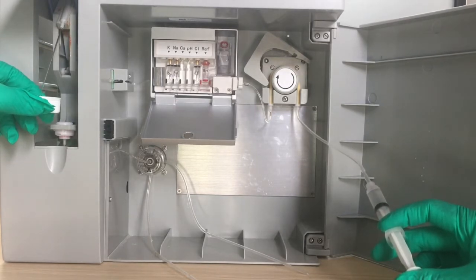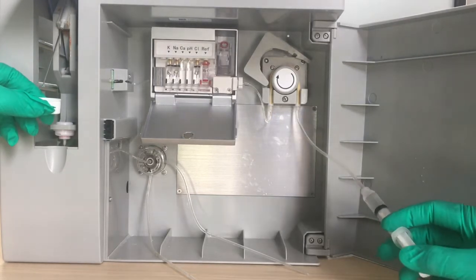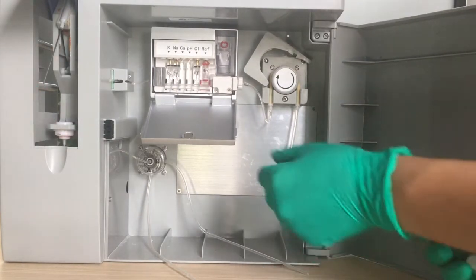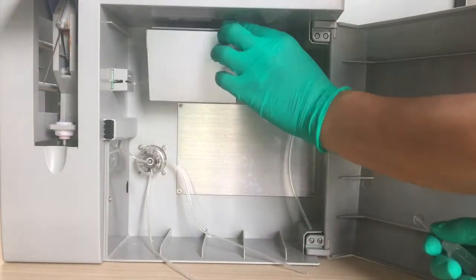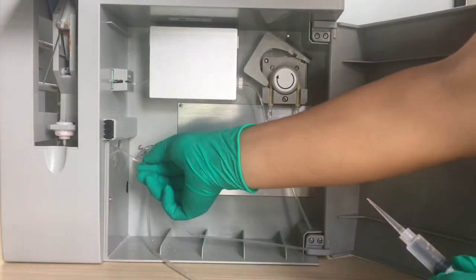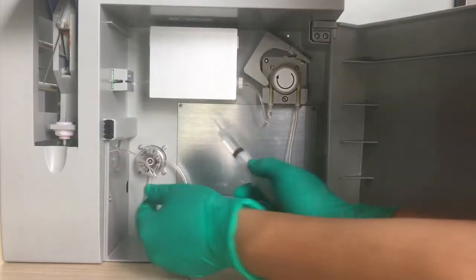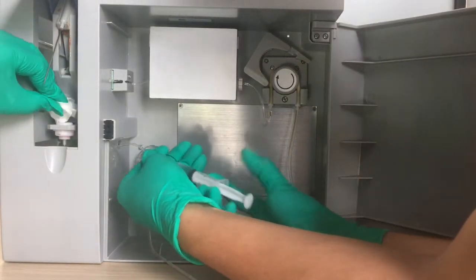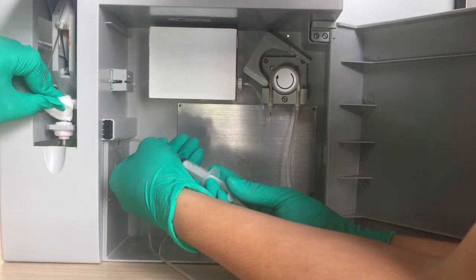Then we can see if water comes out from the sample probe. If there's water, this part is smooth with no blockage. Then we take this off, connect with the syringe, and put it there with tissue.